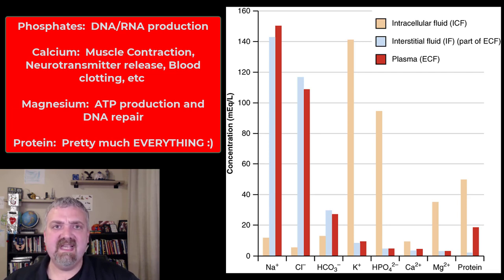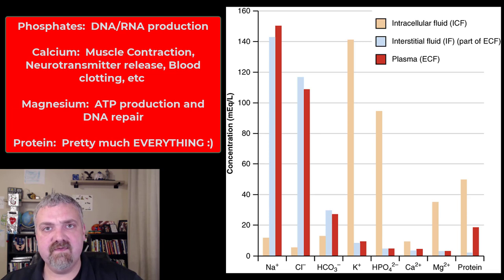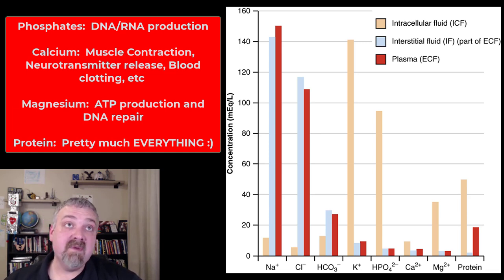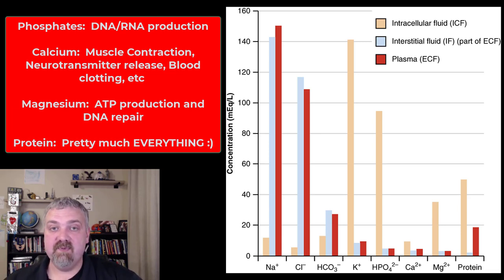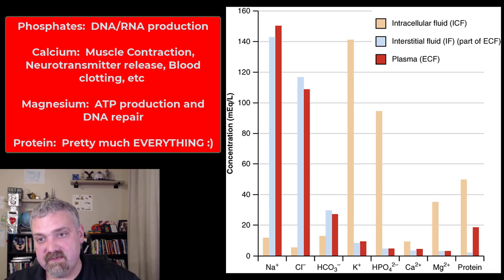Calcium is wildly important. We think about bone health with calcium, but it's involved in every muscle contraction, neurotransmitter release, blood coagulation, enzyme activity, and it's a second messenger for your hormones — super important. Magnesium's primary roles are helping in ATP production and DNA repair. And protein does everything: you've got literally thousands of enzymes built out of proteins, plus transporters, structural proteins. Without protein you couldn't survive.